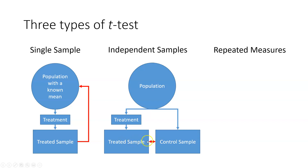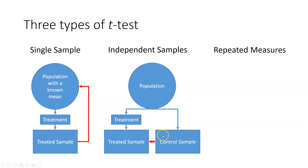We compare these two samples to each other, and this t-test is called an independent samples t-test because these two samples are independent of each other — they are not related in any way, not the same people, not the same treatment. They've just been independently drawn and independently compared to each other.